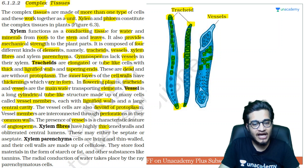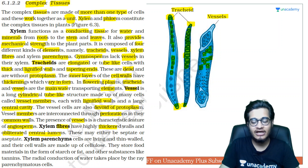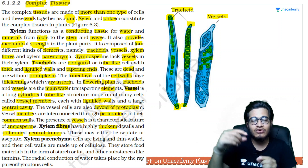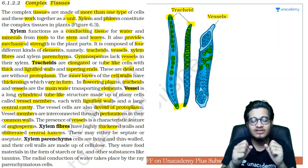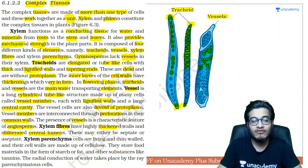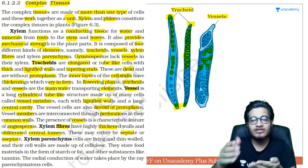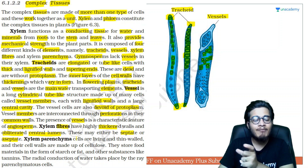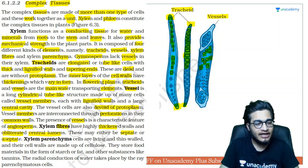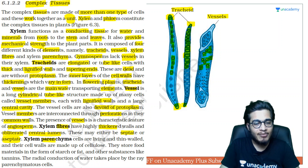Xylem fibers have heavily thick walls and an obliterated central lumen. As we know, fibers are thick, have pointed ends, are very strong, and provide strength. They can be septate — having cross walls that form compartments — or aseptate, meaning no cross walls and no compartments in between.